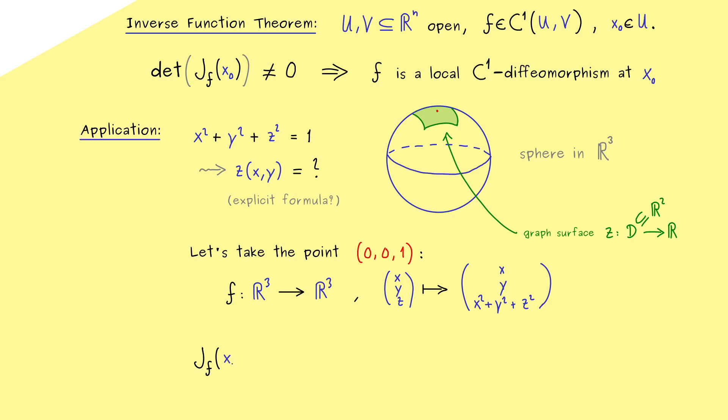This means we have to calculate the Jacobian and check the determinant at our north pole. This is not so hard, because the Jacobian is given by partial derivatives. So in the first column we have the partial derivative with respect to x, which means we have (1, 0, 2x). And the second is with respect to y, which means we have (0, 1, 2y).